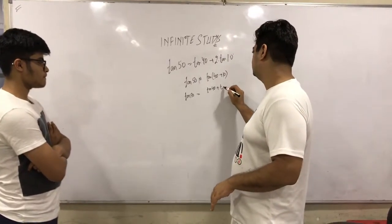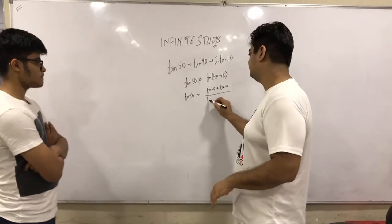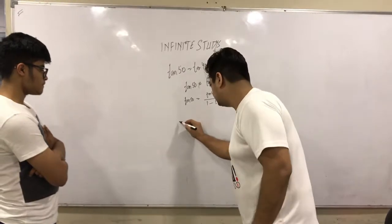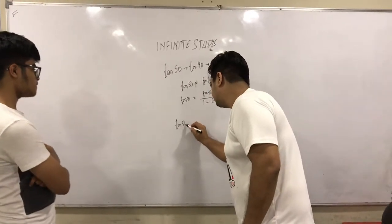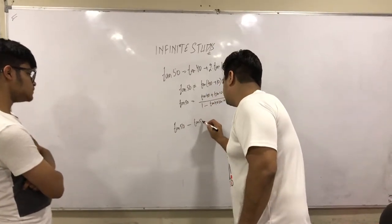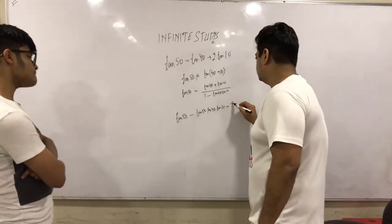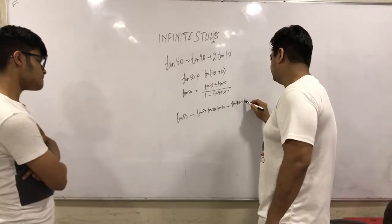Now if you cross multiply, tan 50 into 1 minus tan 40 into tan 10 is equal to tan 40 plus tan of 10 degrees.